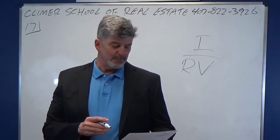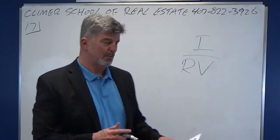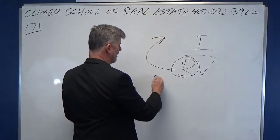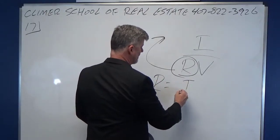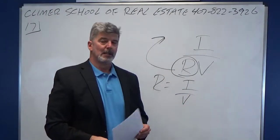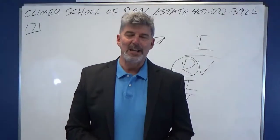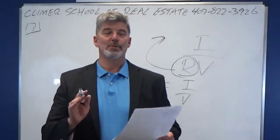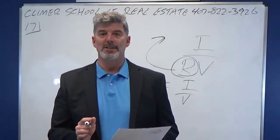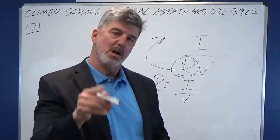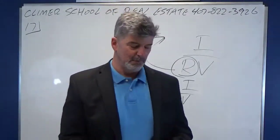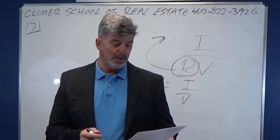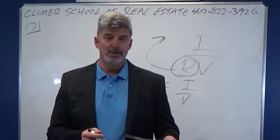So they're asking for capitalization rate. I'm going to take that R and send it over here. What do you got left? I over V. The problem actually gave you NOI and value. There's a couple things in the problem that are totally useless garbage information — distractors. All that matters is value: you sold for a million two. What was the NOI? $133,320.